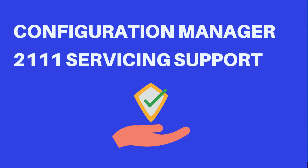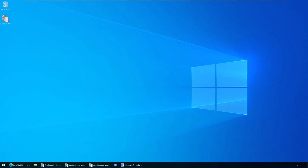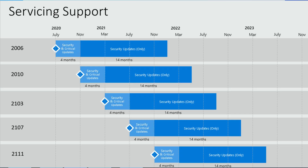Configuration Manager 2111 servicing support: Configuration Manager current branch 2111 is the third current branch release of the year 2021. Typically, we see three current branch releases from Microsoft every year. Every new Configuration Manager current branch update version remains in support for 18 months from its general availability release date. Configuration Manager 2111 will receive security and critical updates for the first four months, up to March 2022, and for the next 14 months up to May 2023, it will receive only security updates.